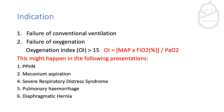So what's the indication? The first indication is failure of conventional ventilation — for example, a baby on maximum pressures and 100% FiO2 not achieving appropriate saturation. We determine this using the oxygenation index (OI), and if it's more than 15 we need to consider high frequency ventilation. This can happen in conditions such as PPHN, meconium aspiration, severe respiratory distress syndrome, pulmonary hemorrhage, and diaphragmatic hernia.